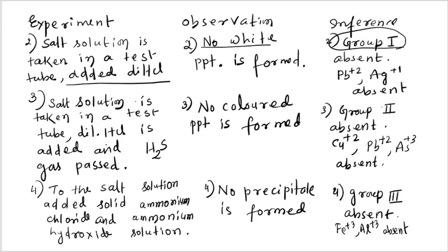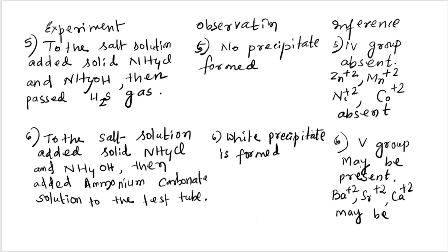We proceed to group two. Dilute HCl is already added to the salt solution, then H₂S gas is passed. No colored precipitate is found, meaning group two is also absent. Group two cations such as Co²⁺, Pb²⁺, and As³⁺ are absent.